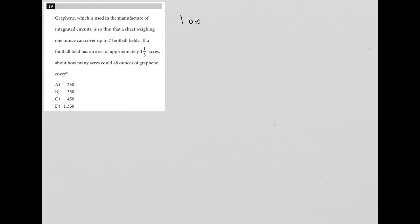So one ounce equals seven football fields. Again, I'm treating this like it is a translate word problem, TWP, which means as soon as I see anything quantitative, I just make sure to write it down. So one ounce of graphene gives you seven football fields.